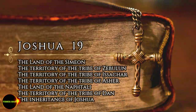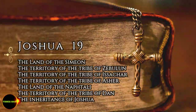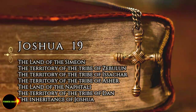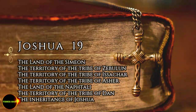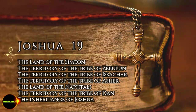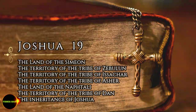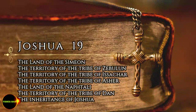The fortified cities were Zidim, Zer, Hamath, Rakath, Kinnereth, Adama, Ramah, Hazer, Kedish, Edriai, and Hazer, Iron, Migdoel, Horam, Beth-Ainath, and Beth-Shemesh. There were nineteen towns and their villages. These towns and their villages were the inheritance of the tribe of Naphtali, clan by clan.